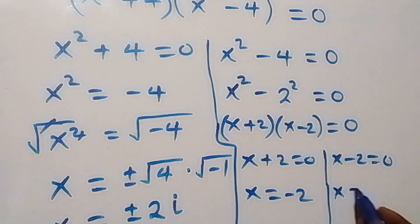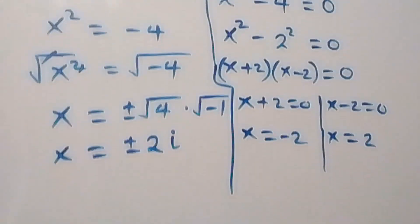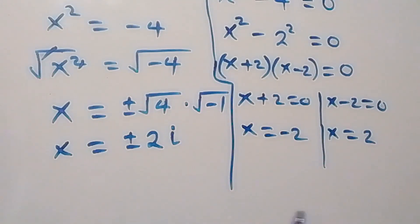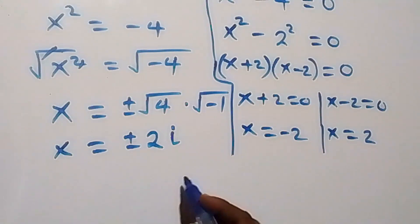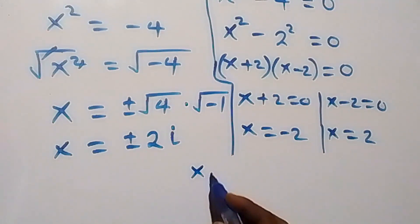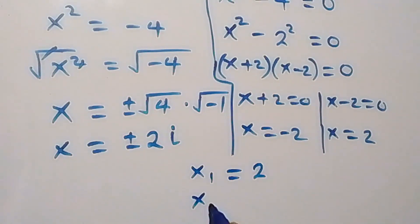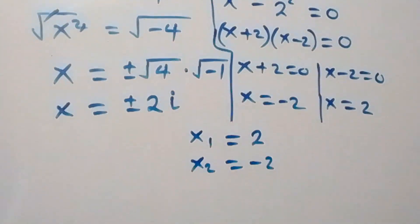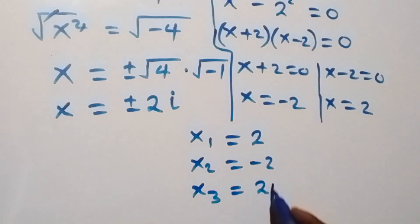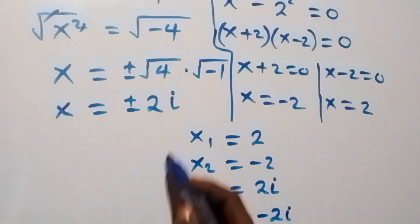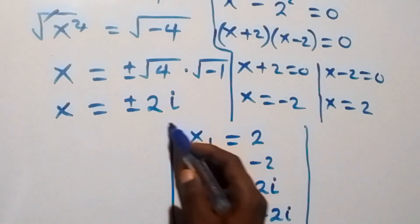So altogether we have four solutions: x₁ equals 2, x₂ equals minus 2, x₃ equals positive 2i, and x₄ equals minus 2i. We have two real solutions and two complex solutions.